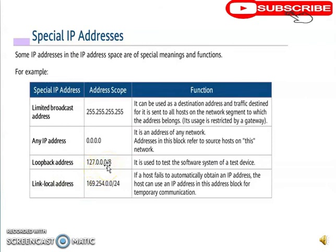The loopback address is 127.0.0.0/8 and is generally used for diagnostics. The link-local address is 169.254.0.0/16 — if a DHCP server is unavailable, a device will use this address temporarily for communication.